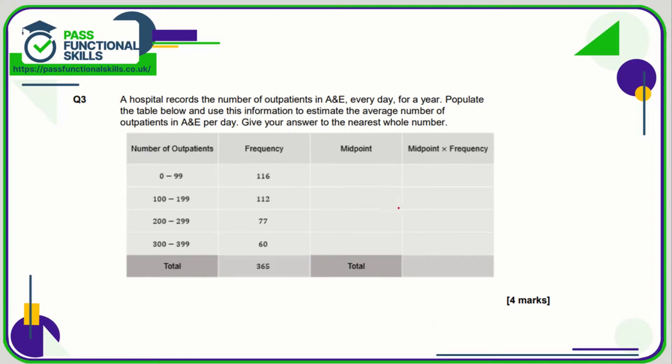Question number three. First of all, let's work out the midpoint. So between 0 and 99 is 49.5, 149.5, 249.5, and 349.5. Midpoint times frequency, so we're multiplying these two columns together to get 5742, 16744, 19211.5, and 20970.